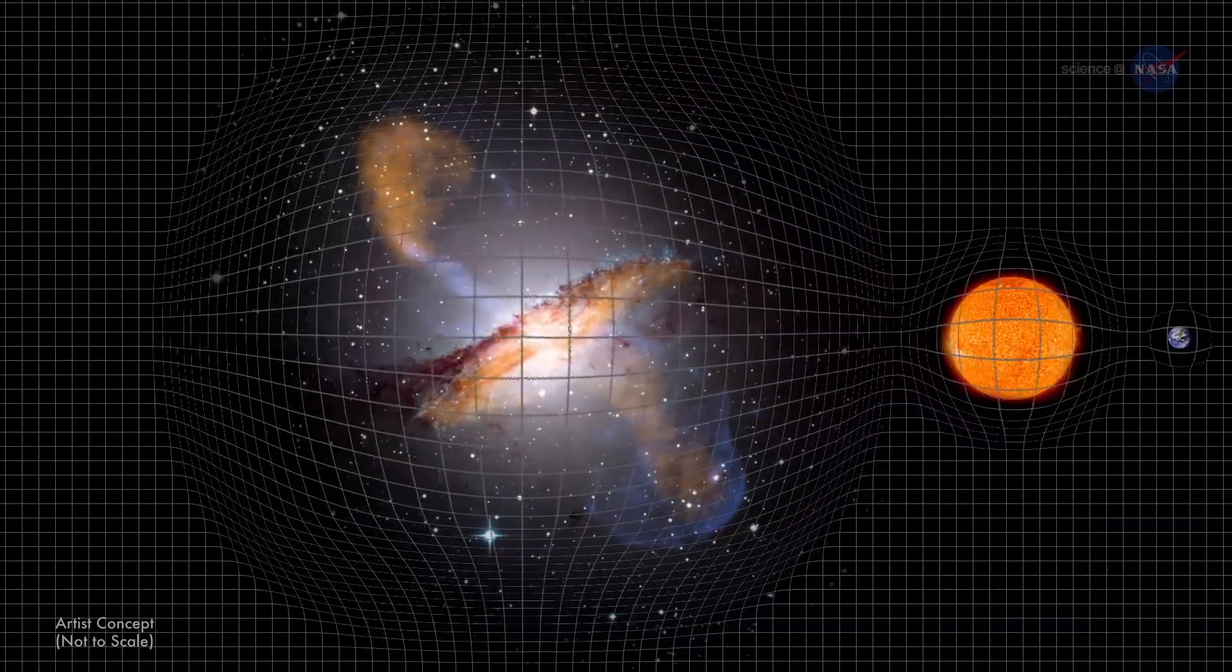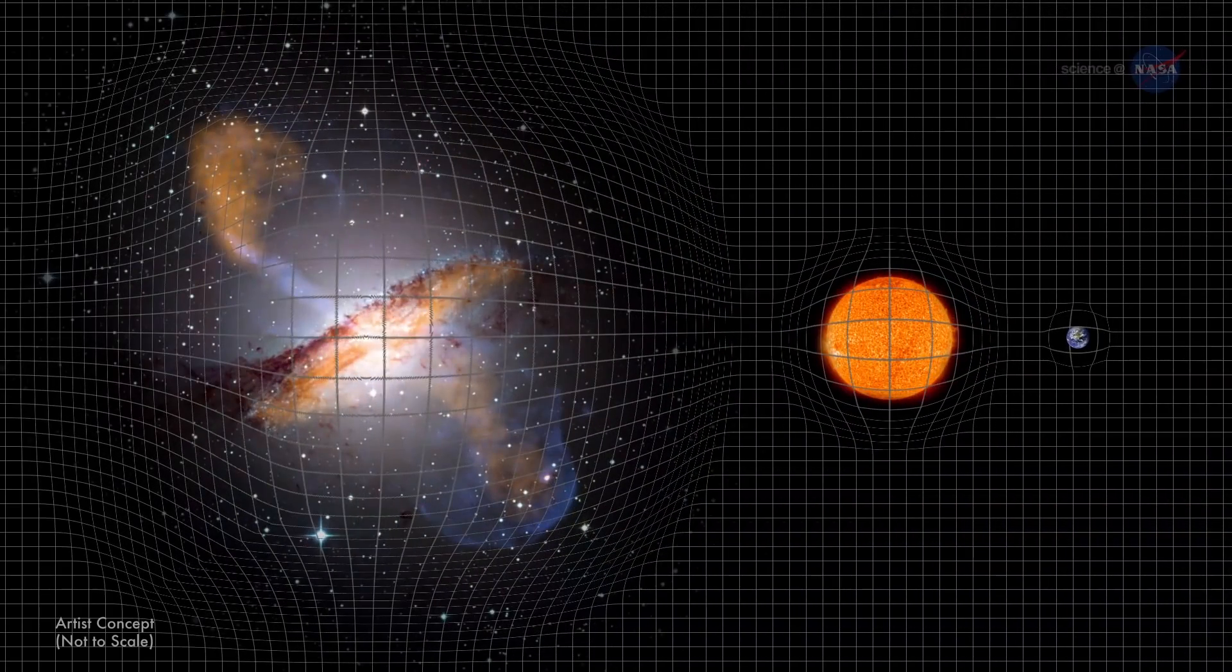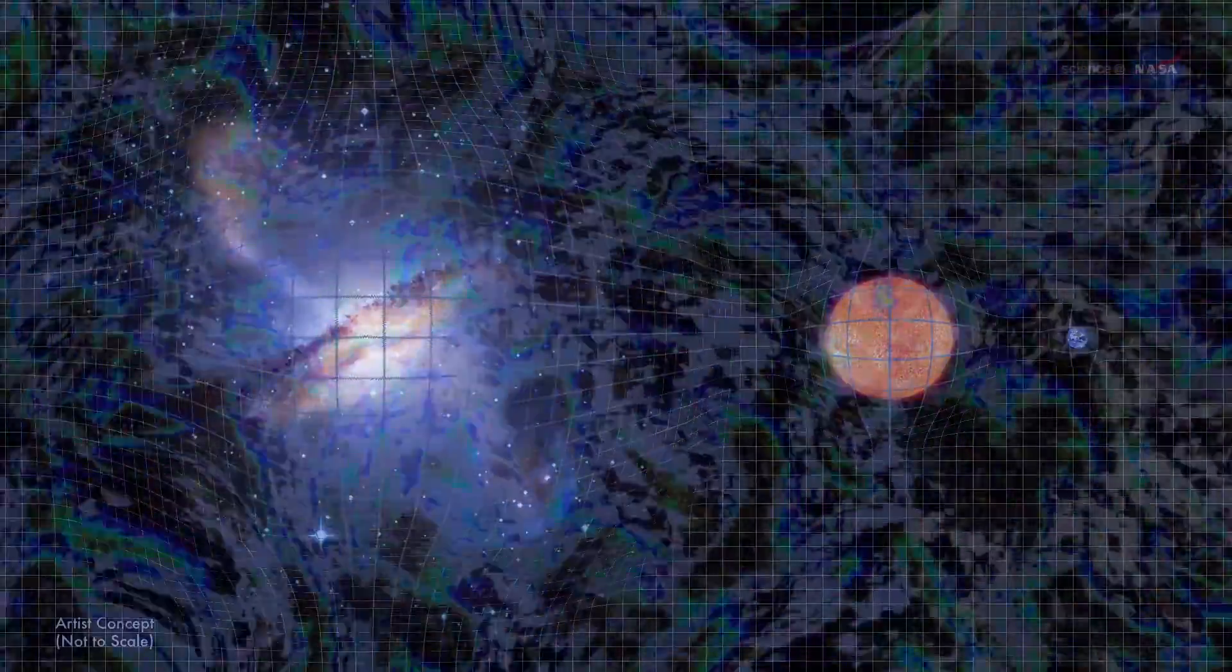A whole galaxy warps spacetime much more. The more massive the body, the more warping. But if we could zoom in on the quantum realm, we wouldn't see a smooth expansive canvas gently distorted by massive bodies. We'd see quantum foam.